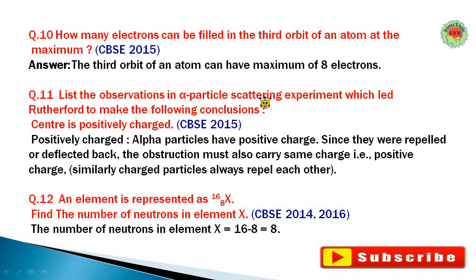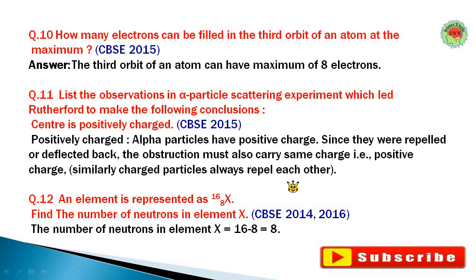Question number eleven: List the observation in the alpha particle scattering experiment which led Rutherford to conclude that the center is positively charged. Alpha particles carry a positive charge. Since they were repelled or reflected back, the obstruction must also carry the same positive charge. Like charges always repel each other, so the center — the nucleus — is positively charged.